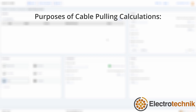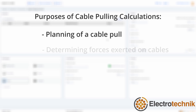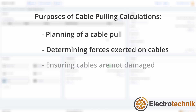Cable pulling calculations are used for several reasons: assisting with the planning of a cable pull before it's actually done, determining the forces exerted on the cables, and ensuring that the forces acting on the cable, such as tension or sidewall pressures, will not damage the cable during pulling.